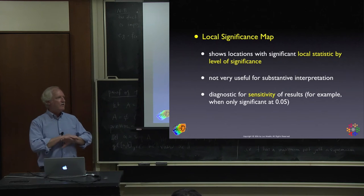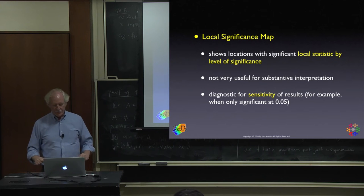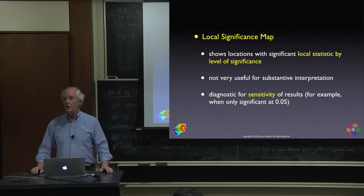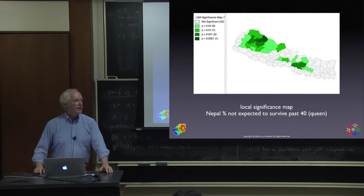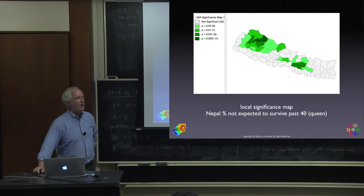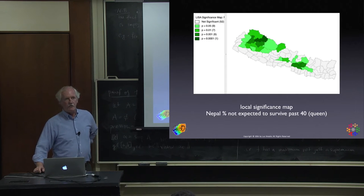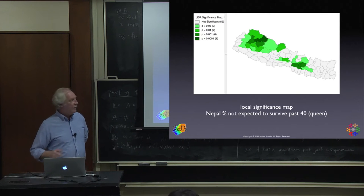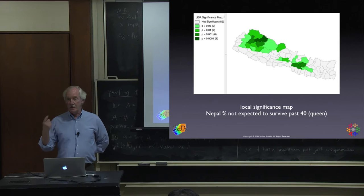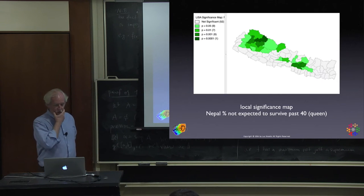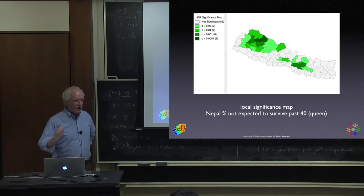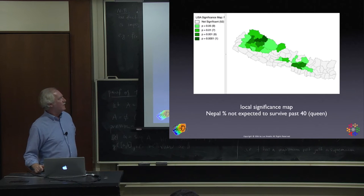When they're not significant, don't map them — leave them white or whatever. What is significant depends on the p-value you pick. In GeoDa you can assess the sensitivity of the results to the p-value you choose. This is the opposite of life expectancy — not expected to survive past 40. These are the significant clusters.